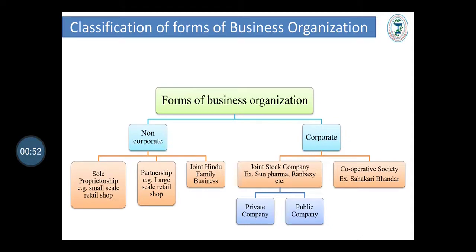Classification, which we have already discussed: forms of organization are of two types — non-corporate, i.e., sole proprietorship, partnership and joint Hindu family business, which we have already discussed in the last video. And now we are going to see corporate forms of business organization, i.e., joint stock company and cooperative society.